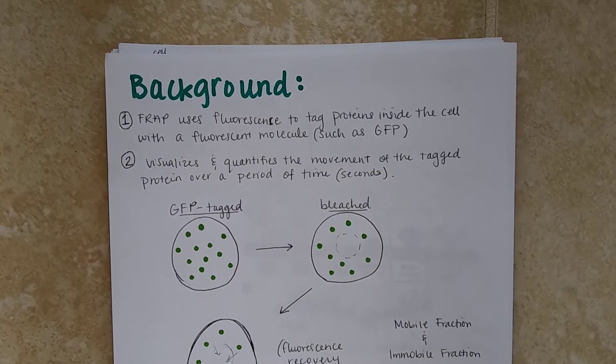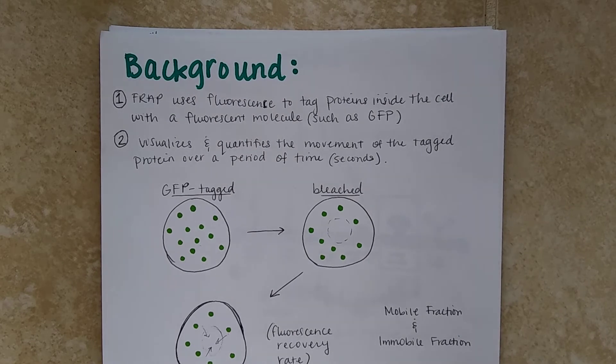So some background information. FRAP uses fluorescence to tag proteins inside the cell with a fluorescent molecule, such as GFP, also known as green fluorescent protein. By doing so, it allows us to see the fluorescence of a protein and analyze the mobility inside the cell.